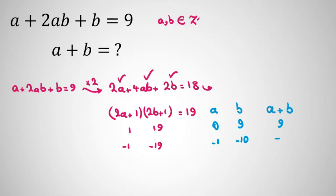Then a plus b: first case it is 9, second case it is negative 11. So we found two cases for these.